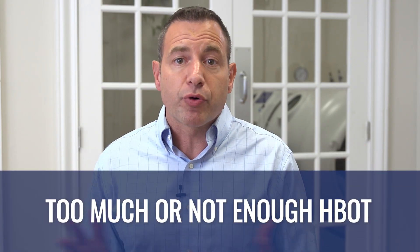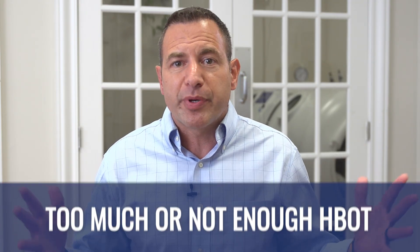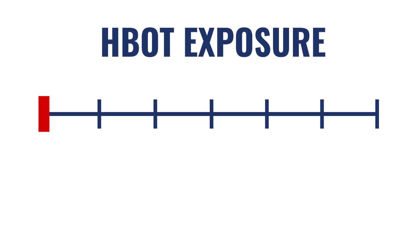So let's first discuss the too much or not enough. I want you to picture a continuum in your mind. On one end of that continuum is the most mild form of hyperbaric — let's call it 1.3 atmospheres on air, 21% oxygen.